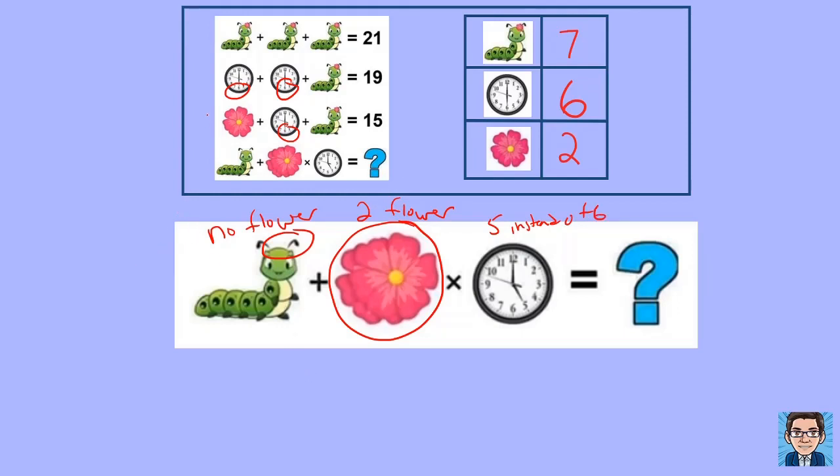We notice this caterpillar, if you look, all the other caterpillars had 5 sections. This caterpillar is a little longer. It has one extra section. 1, 2, 3, 4, 5, 6. So what does that mean for our numbers?